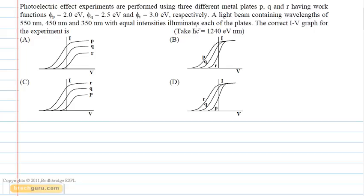We know that work function is the minimum amount of energy required to emit the electron from the photoelectric plate.